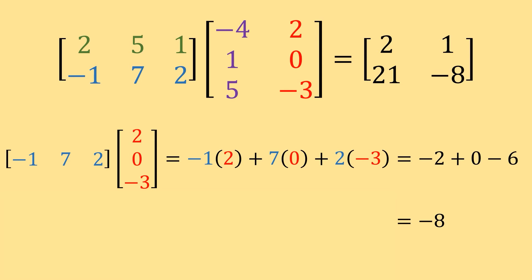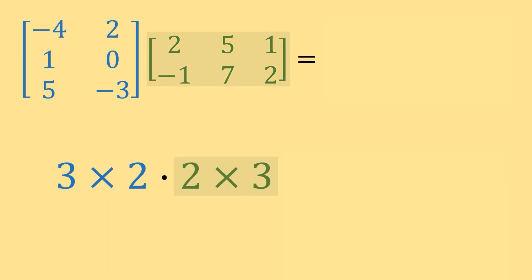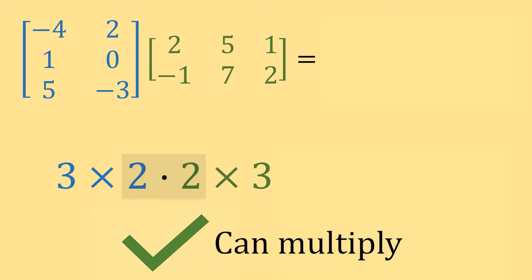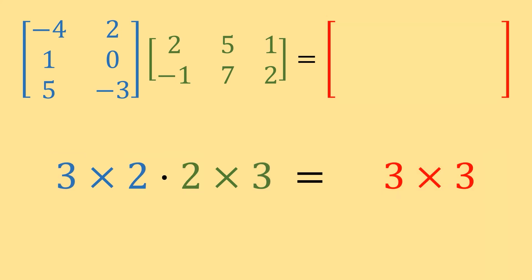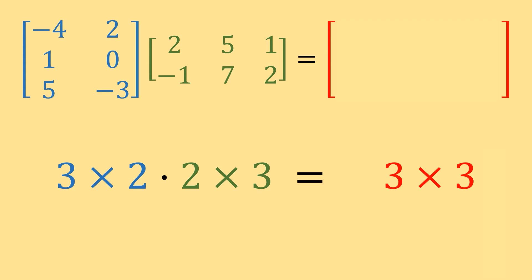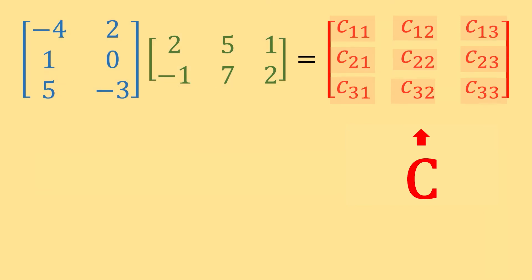Now let's switch the order and multiply matrix B times matrix A. Matrix B is 3 by 2 and matrix A is 2 by 3, so we have 3 by 2 times 2 by 3. The interior numbers match, so we can multiply, and the exterior numbers give us a 3 by 3 result — which is interesting, since our result is bigger than the matrices we started with. If we let our result be matrix C, we'll have nine row-times-column multiplications to perform.